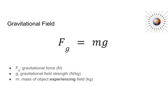You may have noticed that the gravitational field and gravitational force equations are very similar. After all, Fg equals GM1M2 over R squared, and g equals GM over R squared. Substituting g into the first equation, the force of gravity equals the gravitational field strength times the mass. So Fg, the gravitational force measured in newtons, equals little g, the gravitational field strength in newtons per kilogram, times M, the mass of the object experiencing the field.